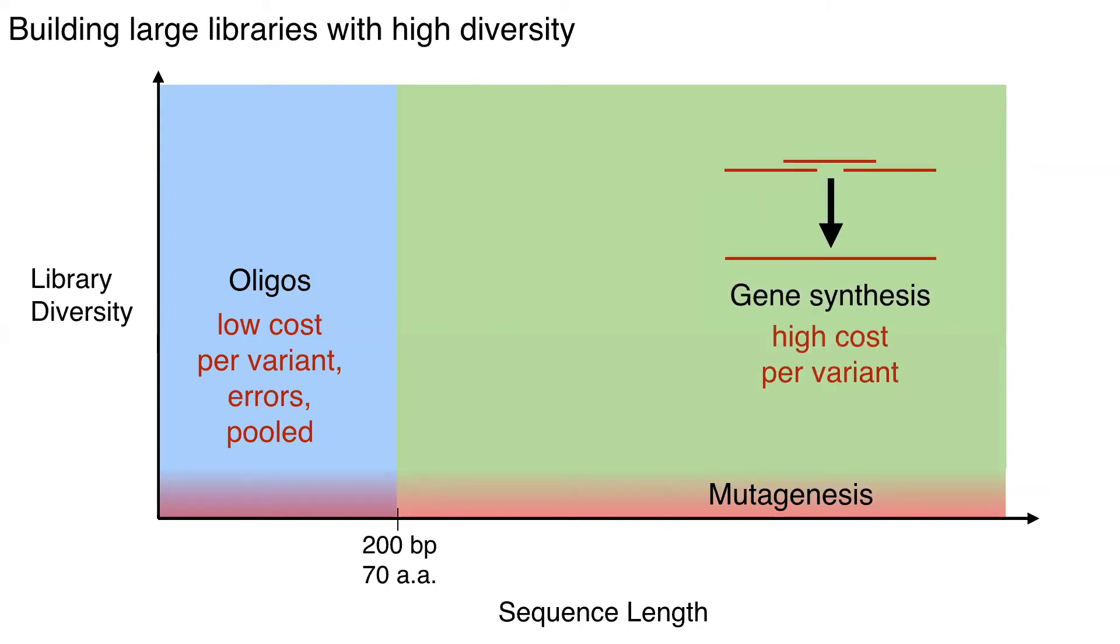And we've also got gene synthesis, which is kind of this umbrella term for taking all these low cost oligos and stitching them together into much longer fragments. Unfortunately, up to now, these kind of suffer from a high cost per variant. So unless you have a massive budget, it's going to be really hard for you to access really scales that are kind of game changing.